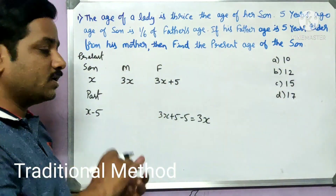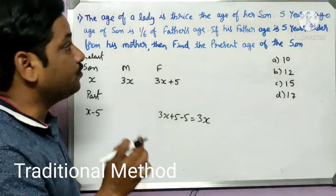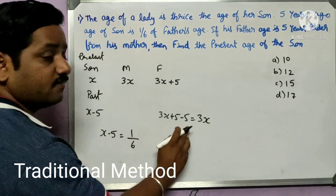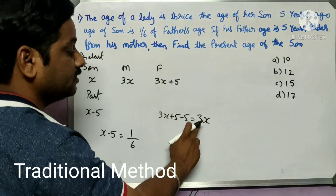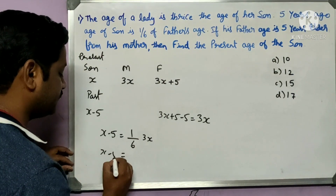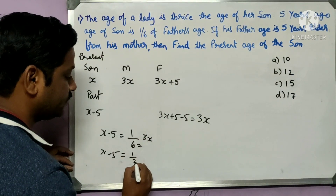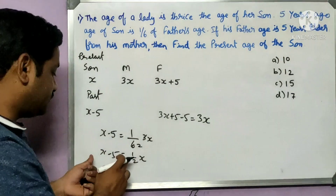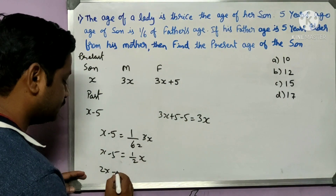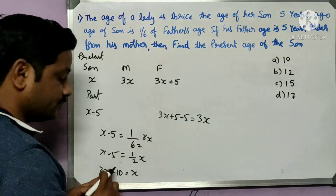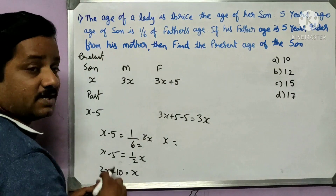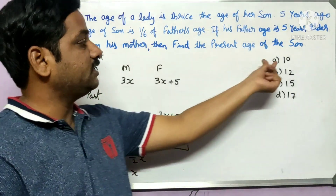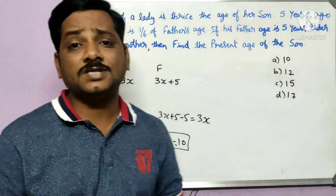Five years ago, the age of the son equals one-sixth of the father's age. So: x − 5 = (1/6) × 3x, which simplifies to x − 5 = x/2. Taking x to the left-hand side: 2x − x = 10, so x = 10. The present age of the son is 10, which is option A.